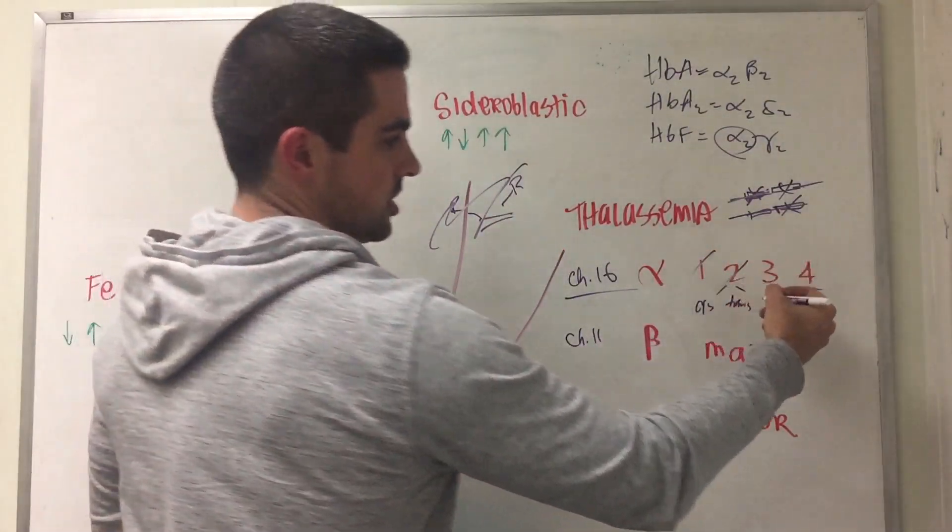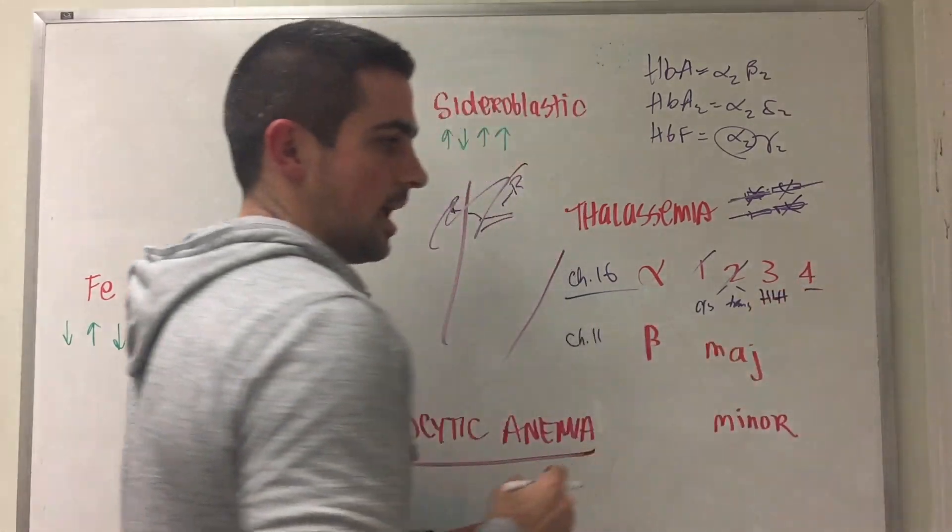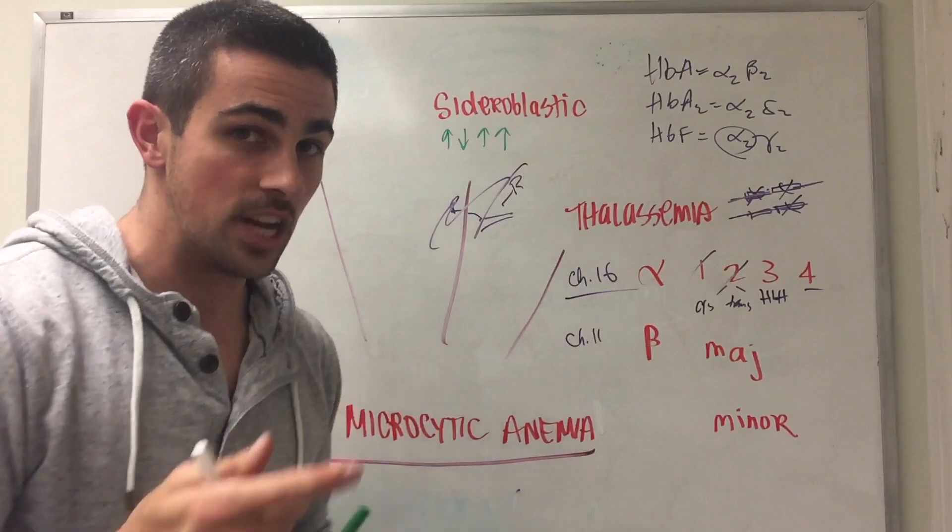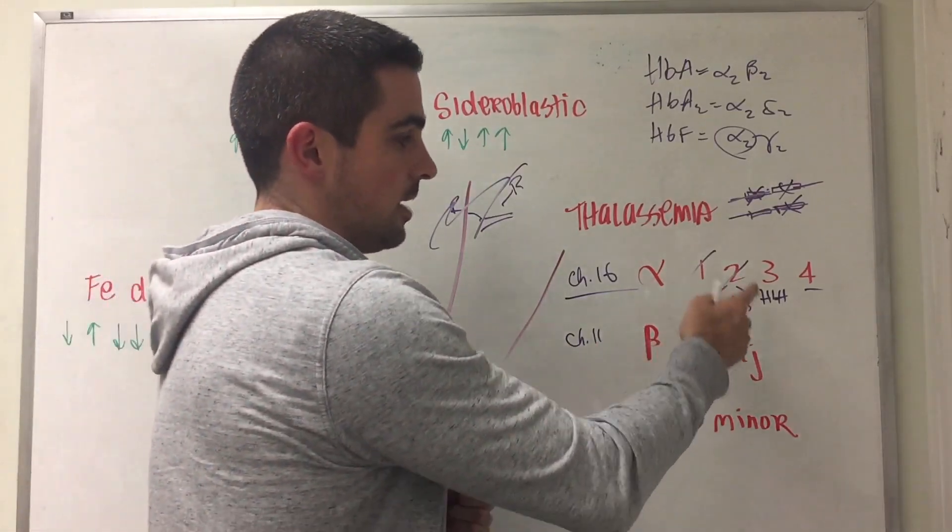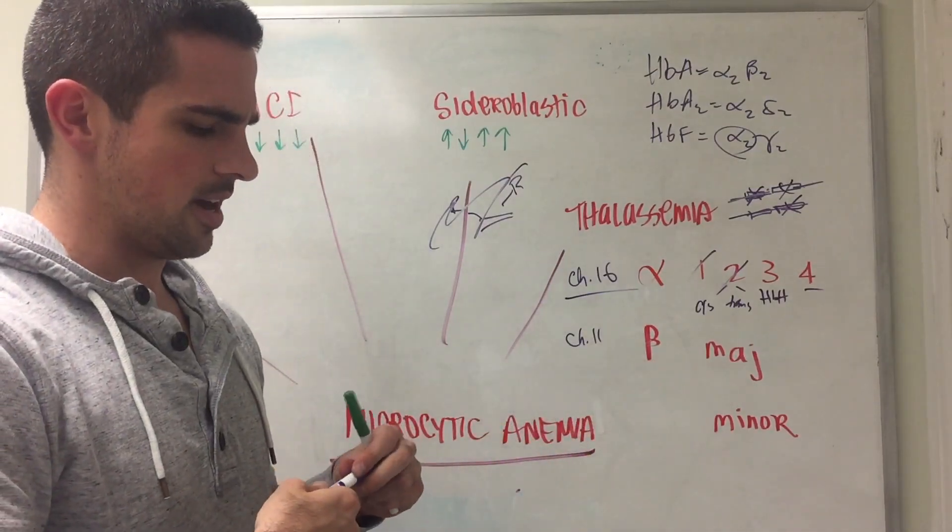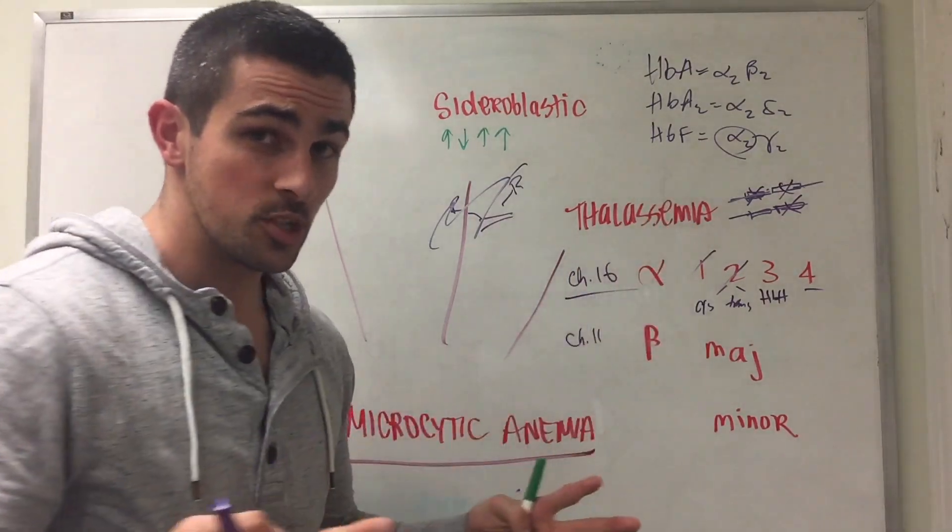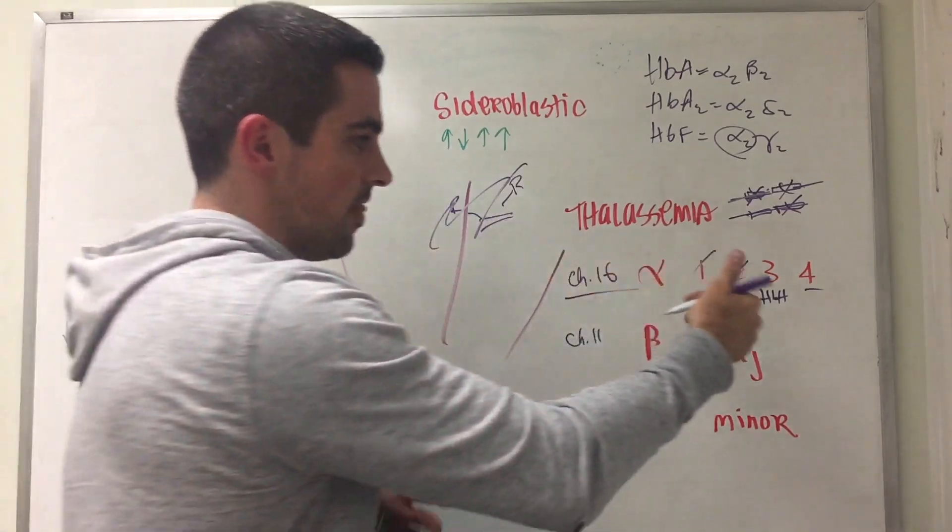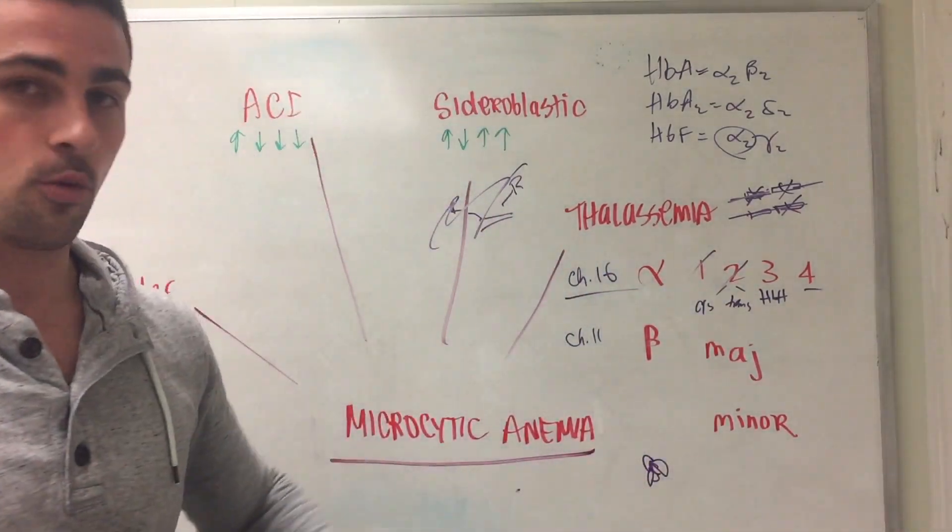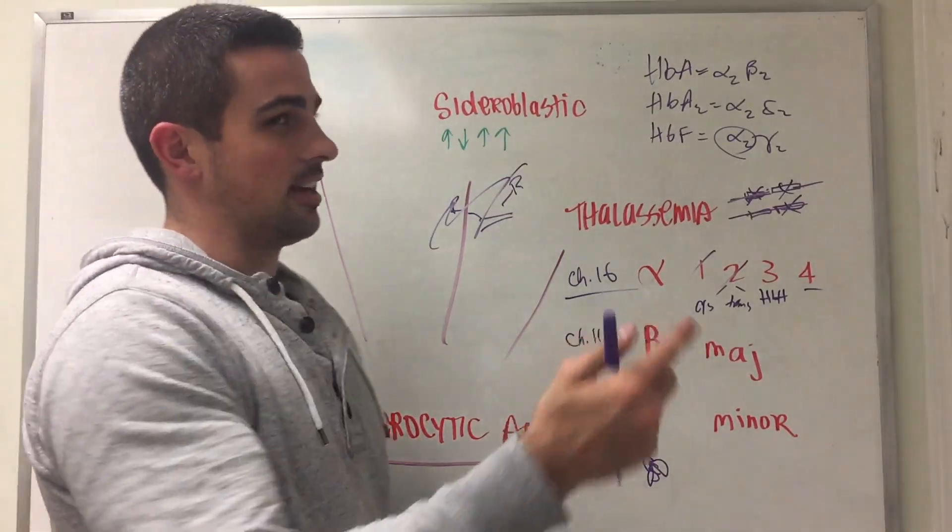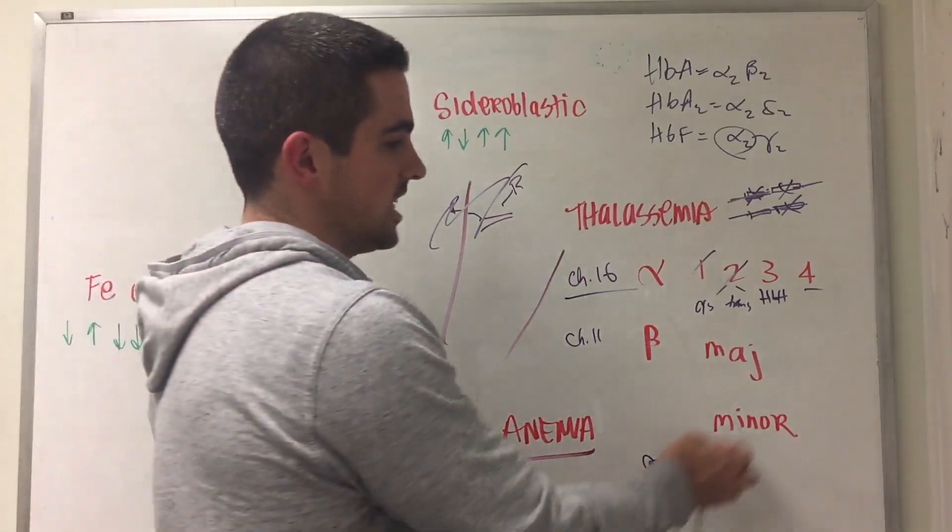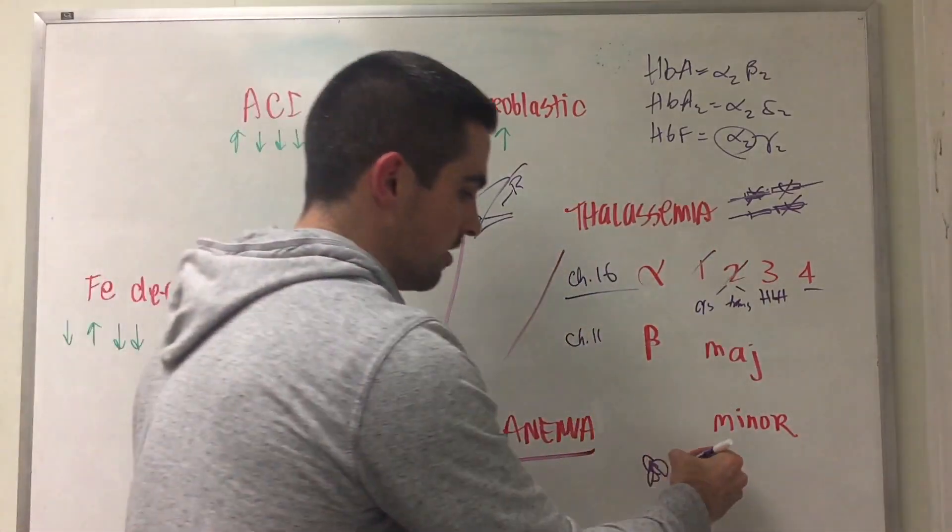If you have three deletions you have something called HbH. This is an issue because you have a lot of alphas missing. Your beta chain is fine but then you're going to start making beta tetramers. These four beta tetramers are going to combine together and form something called a Heinz body. We're going to look at Heinz bodies when looking at G6PD deficiency. But as of right now the Heinz body in HbH is composed of beta.